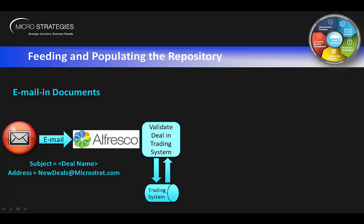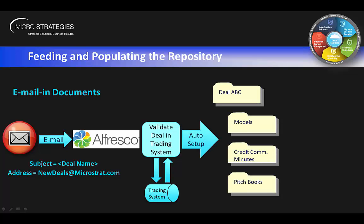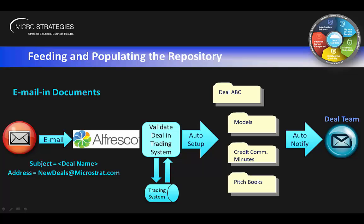Once Alfresco validates the deal, it'll automatically set up a folder structure based on the subject — in this case DealABC — grabbing the template folder structure and automatically building it out. Once the folder structure is built, it notifies the deal team with an email containing a link to the DealABC folder. So in summary: a user created an email, assigned the deal name as subject, attached the documents, emailed it in, Alfresco validated the deal, automatically built the folder structure, and alerted the deal team.